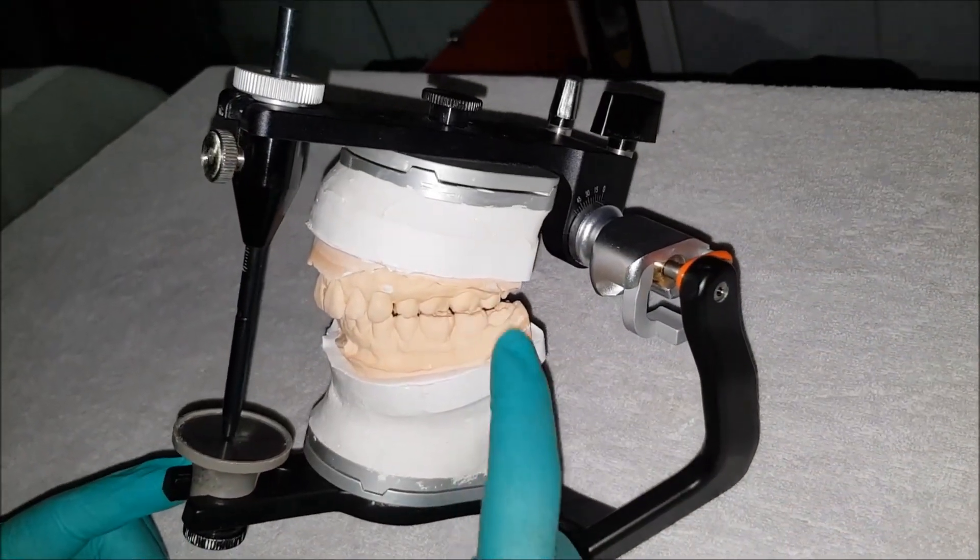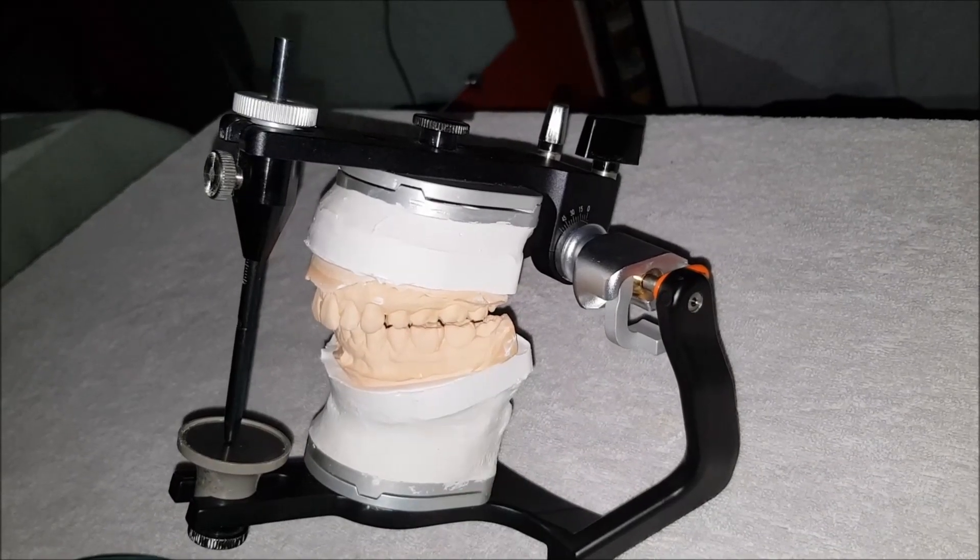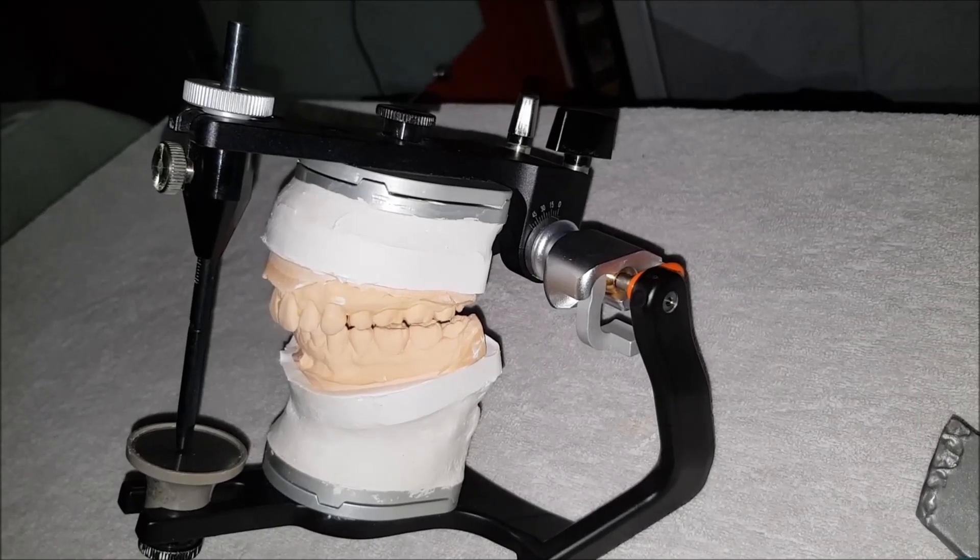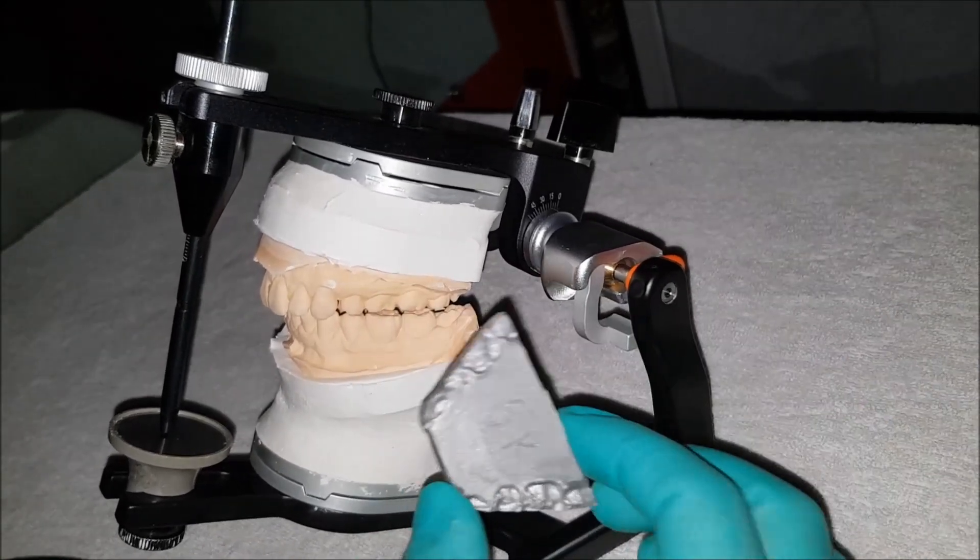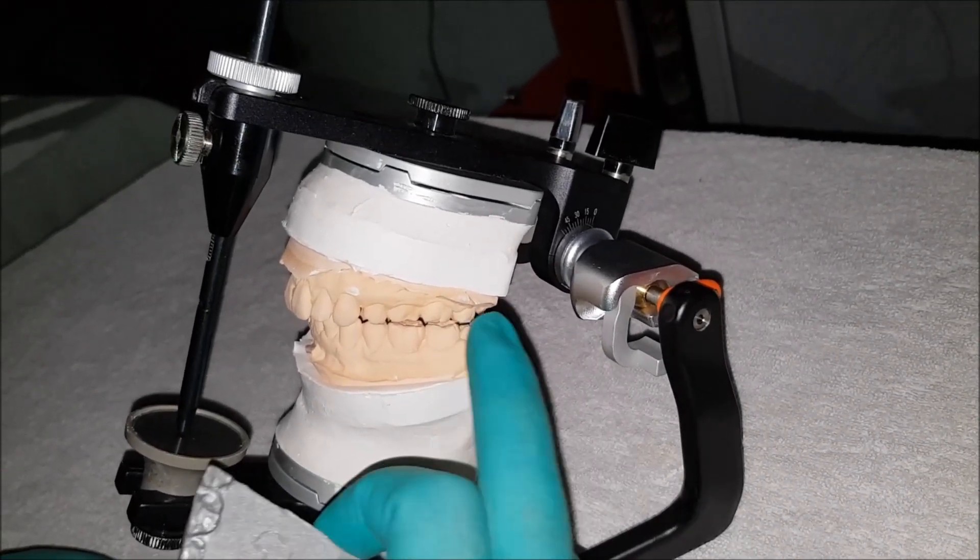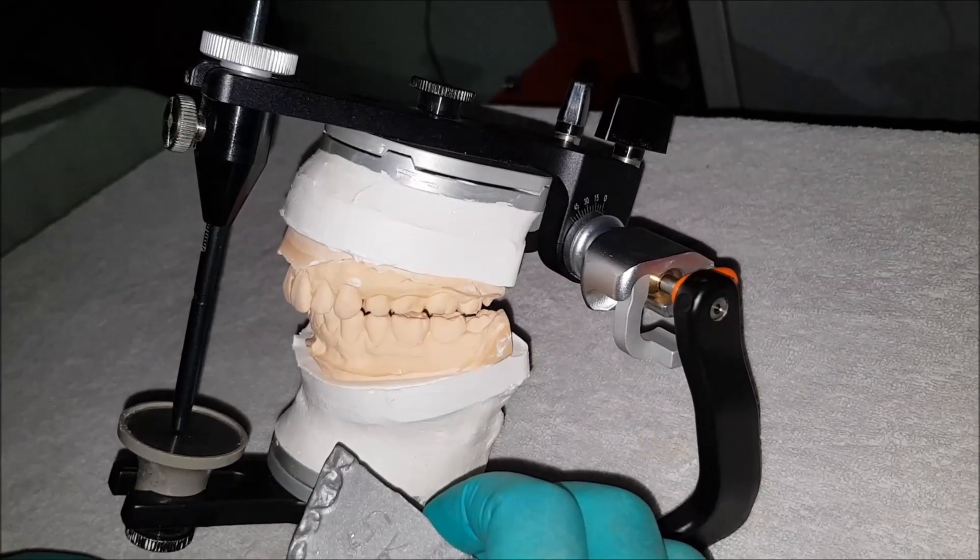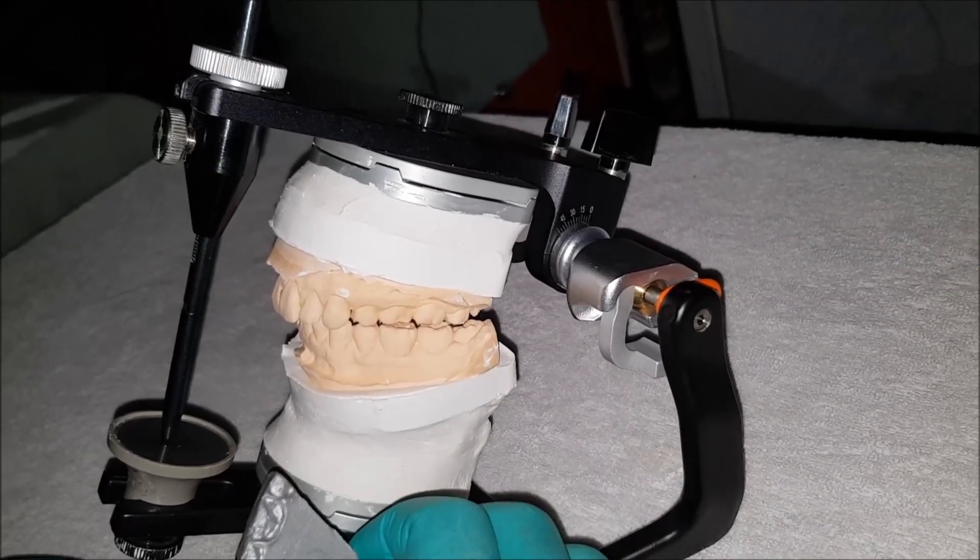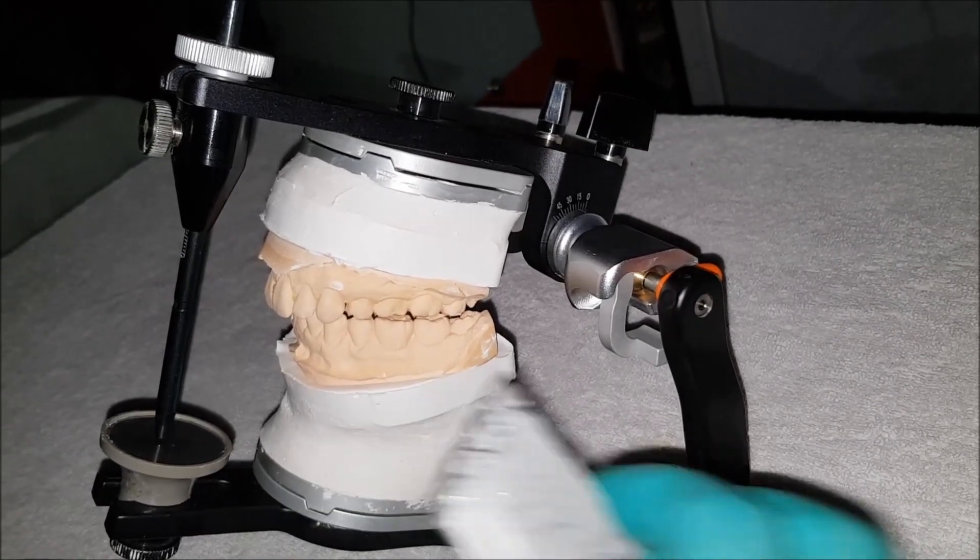Here we have the patient's maxillary and mandibular casts that are mounted in centric relation. In this video, I will show you how to program the articulator, which means customizing the condylar guidance with the help of the protrusive record. In this particular articulator, the lateral condylar guidance is prefixed at 15 degrees, and thus we will use the protrusive record only to gauge what is the correct horizontal condylar guidance angle of the patient.